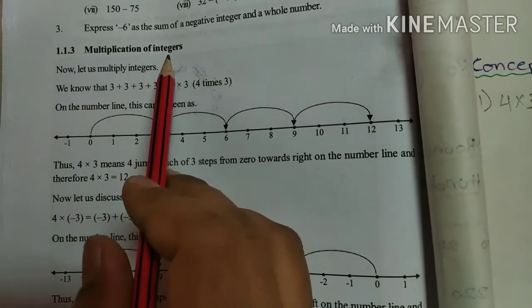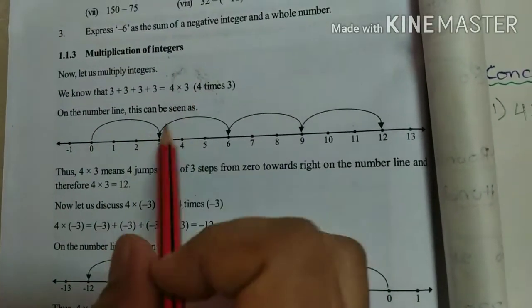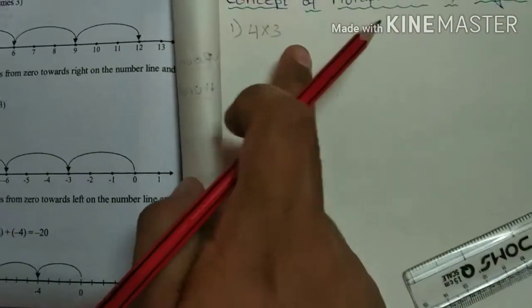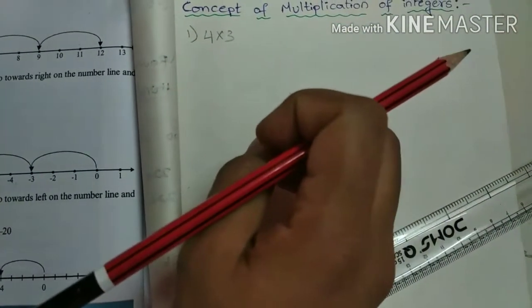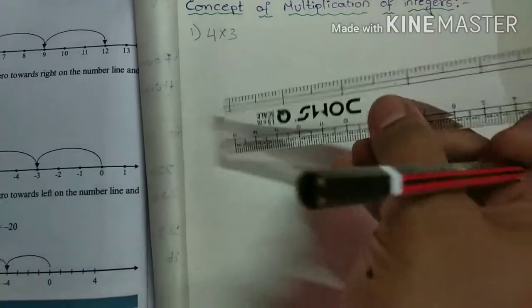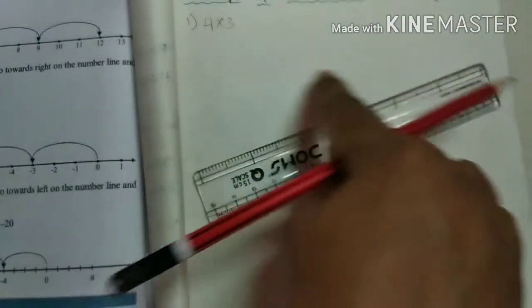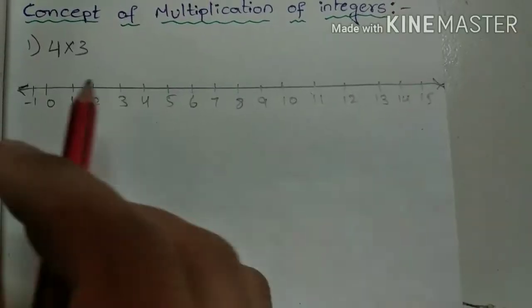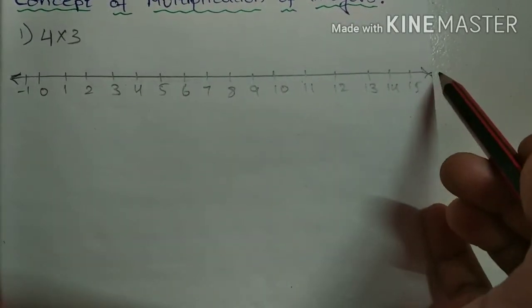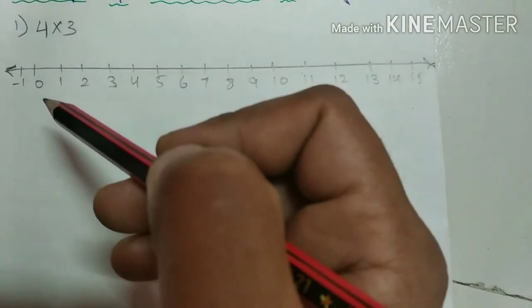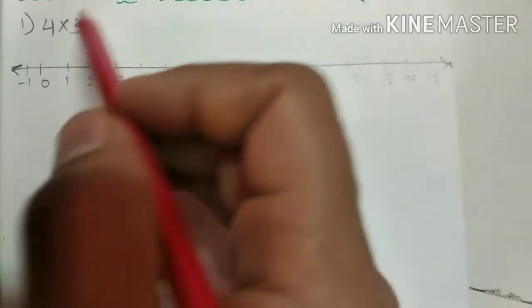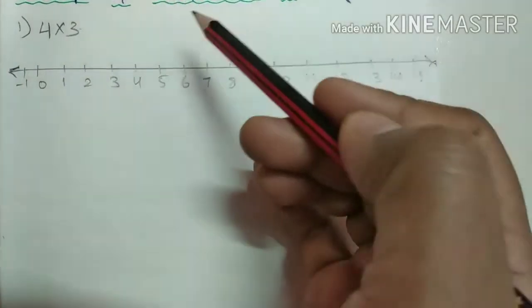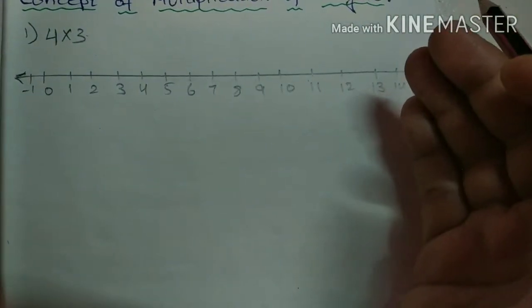I will explain multiplication of integers clearly. Here I take 4 into 3 and show how to represent this multiplication on the number line. First, draw a number line with positive integers to the right. You should think about 4 into 3 — how much? 4 threes are 12, so we write up to 12 on the number line.